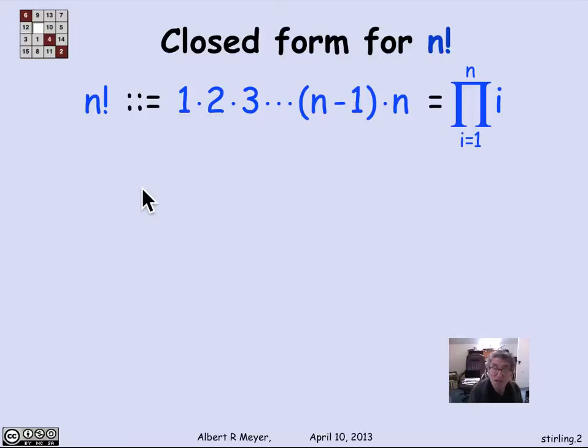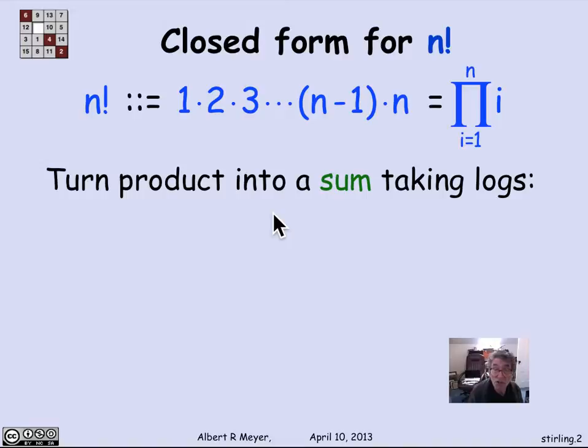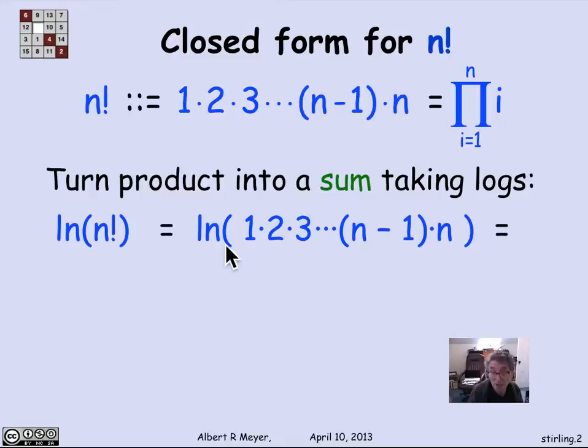So what I'd like to do is get an asymptotic estimate for n factorial. n factorial is one of these quantities where there isn't any exact formula that doesn't have those ellipses in it. There's no short formula with basic operations, fixed size formula that expresses n factorial. But we get a nice formula for a tight asymptotic estimate. The first trick is to turn the product into a sum by taking logs.